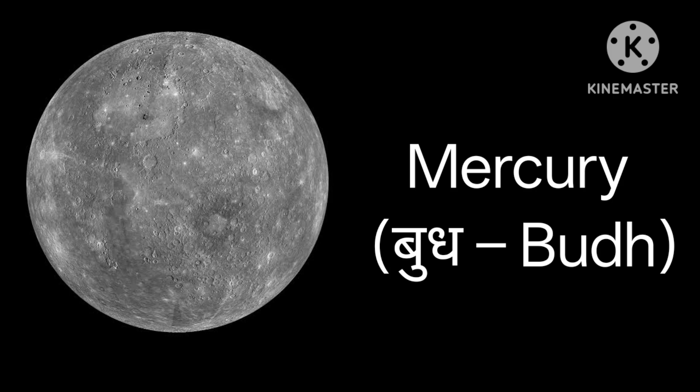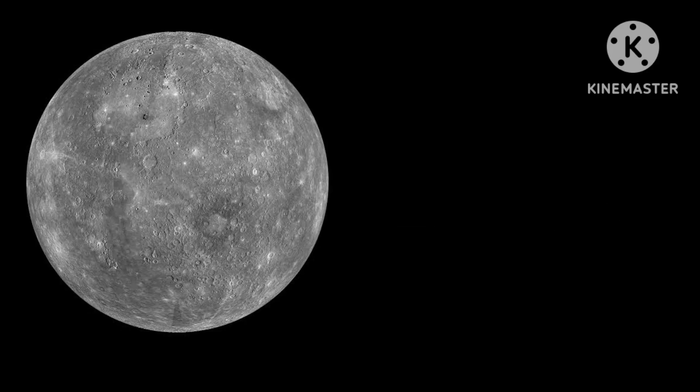Mercury. Do you know? Mercury is the closest planet to the sun. It is known as Budha Graha in Hindi. Mercury — M-E-R-C-U-R-Y.